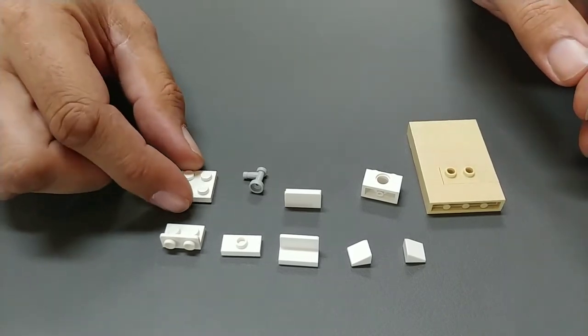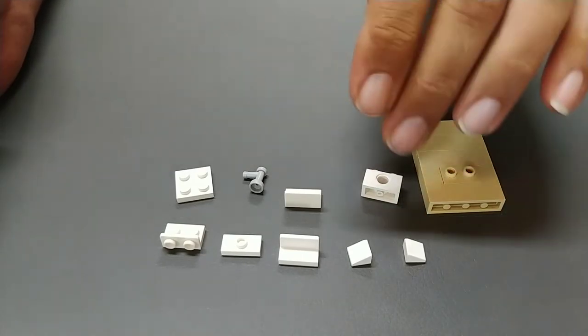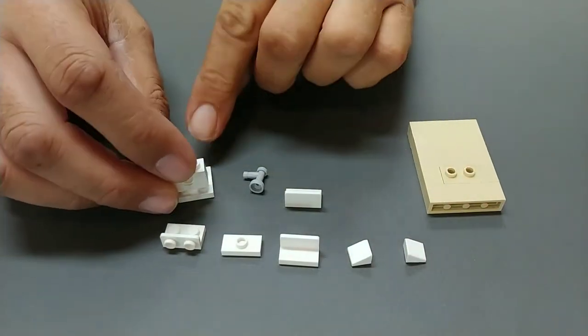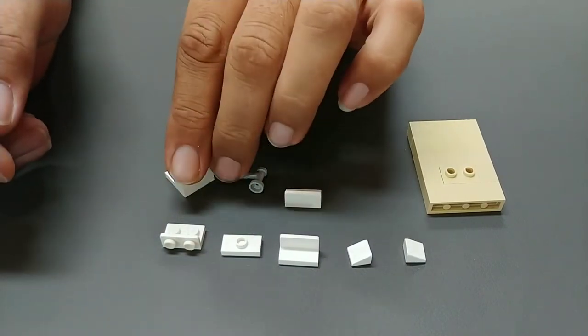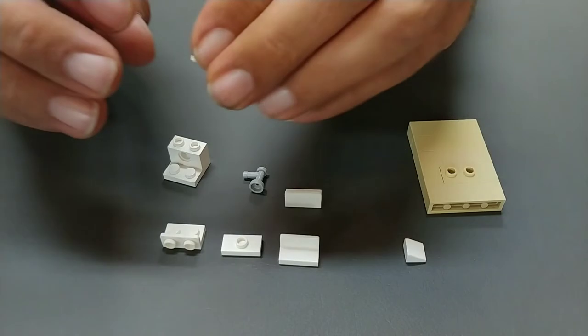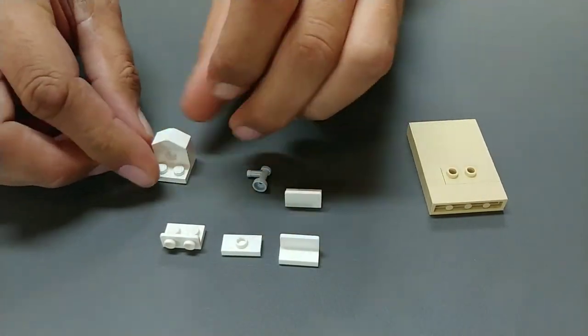Anyway we start the build with a 2x2 plate for your base, and then we take this technic brick with the hole in the center, we put that on the bottom, and we take our two white cheese wedge pieces and put one on each side of the white brick we just put down.